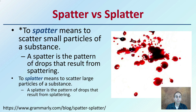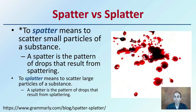First off, it's blood spatter, not splatter. To spatter means to scatter small particles of a substance, and a spatter is the pattern of drops that result from spattering. A splatter means a larger scatter of particles or substances and the splatter is a pattern of drops that result from splattering. So we're looking at blood spatter analysis, not splatter.